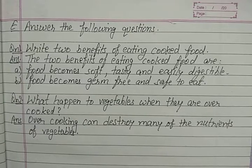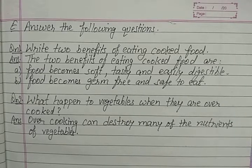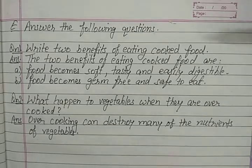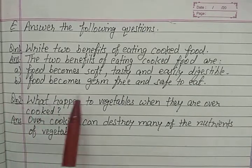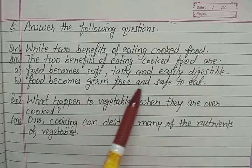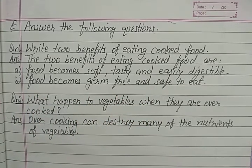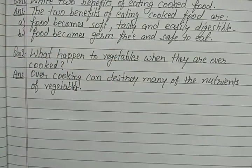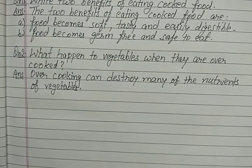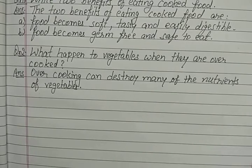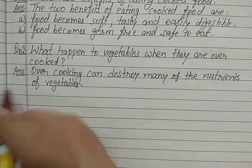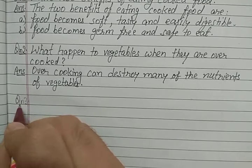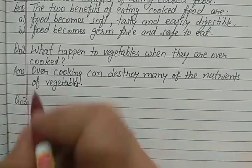Hello students. In the previous video we discussed two questions of EPART: the benefits of eating cooked food. Two benefits are: food becomes soft, tasty and easily digestible, and food becomes germ-free and safe to eat. We also discussed what happens to vegetables when they are overcooked — overcooking can destroy many of the nutrients of vegetables.